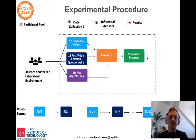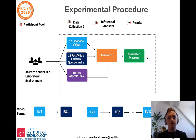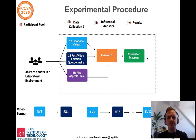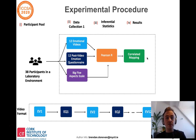In terms of our experiment procedure, we gathered 38 participants to come into a laboratory environment. Each participant first answered the Big Five Aspects Scale, used for categorising people on the five-factor traits and sub-traits. Participants then watched 12 emotionally provocative videos, and after each video answered a post-video emotion questionnaire asking to what extent they felt any of the seven included emotions. We then conducted inferential statistics using Pearson r, a correlation test producing an effect size r ranging from minus one (perfectly negative linear relationship) to zero (no relationship) to plus one (perfectly positive linear relationship), resulting in a correlated mapping between personality traits and the basic emotions.